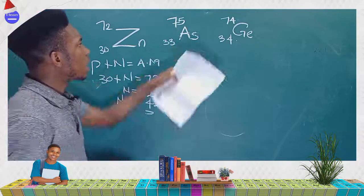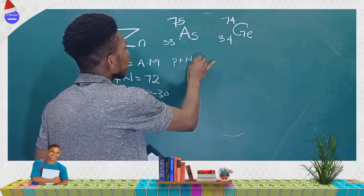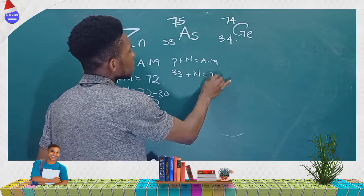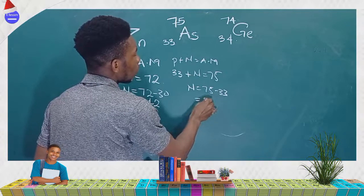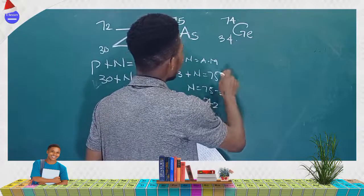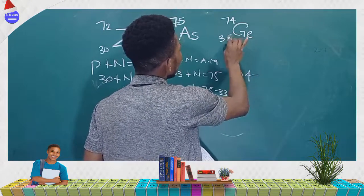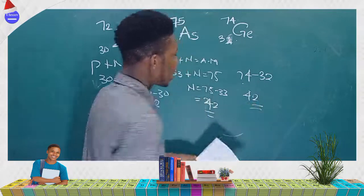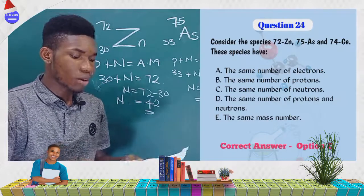For arsenic: 75 minus 33 equals 42 neutrons. For germanium: 74 minus 32 equals 42 neutrons. All three species have 42 neutrons, so the correct answer is option C — they have the same number of neutrons.